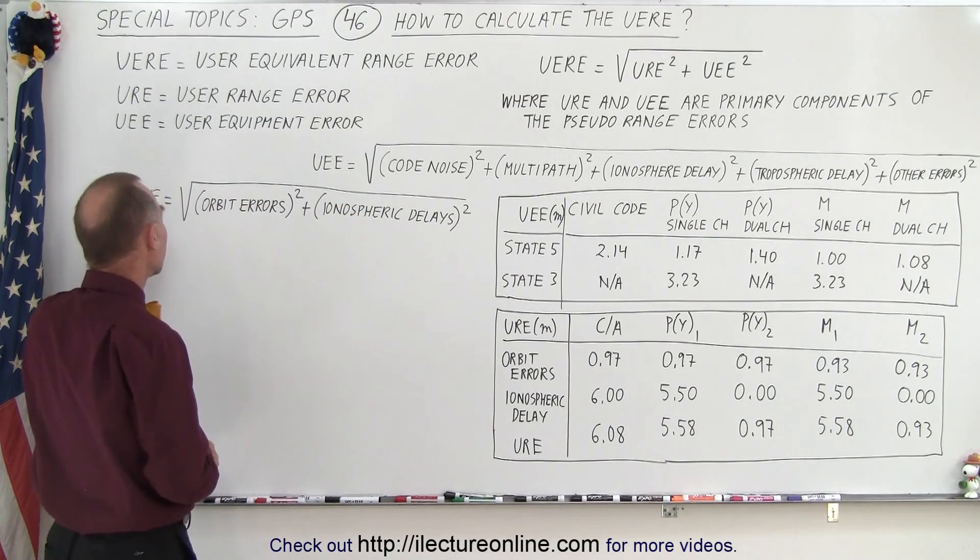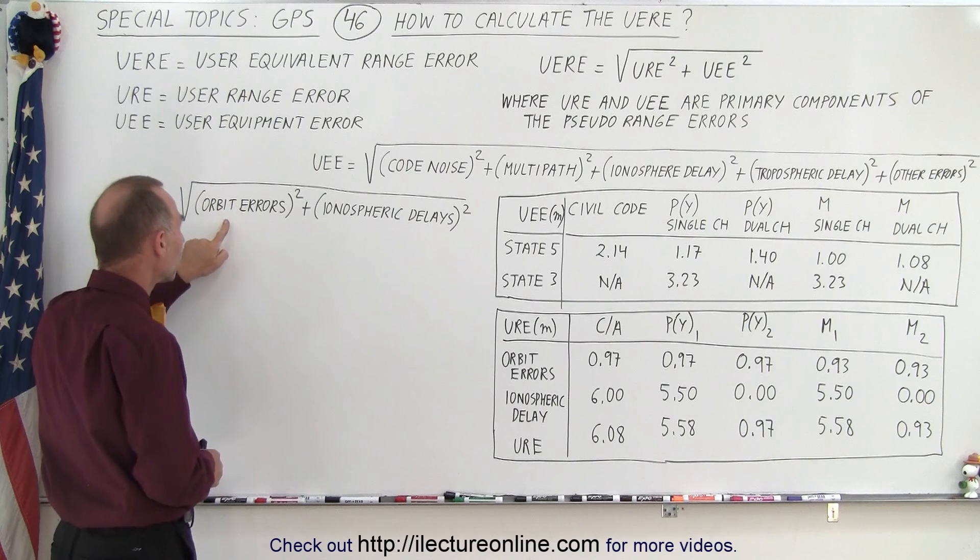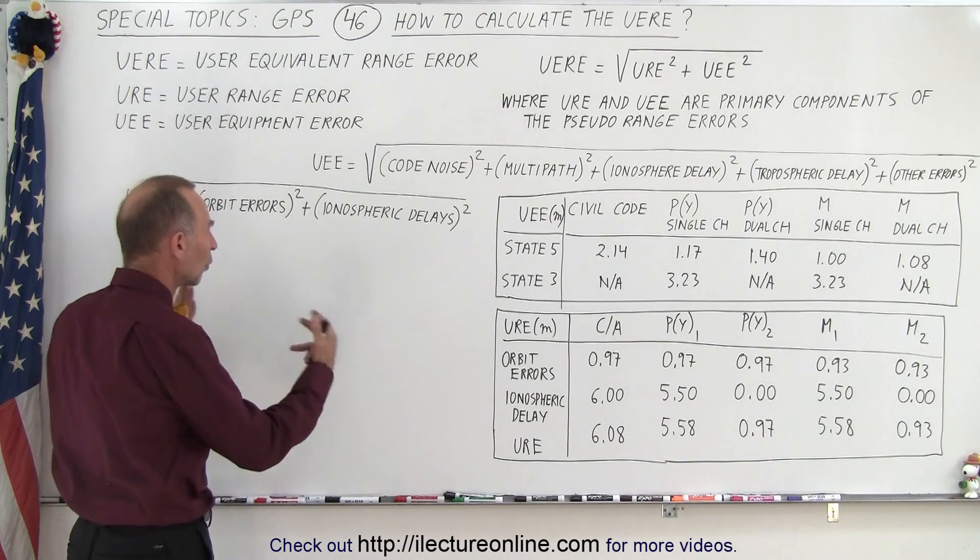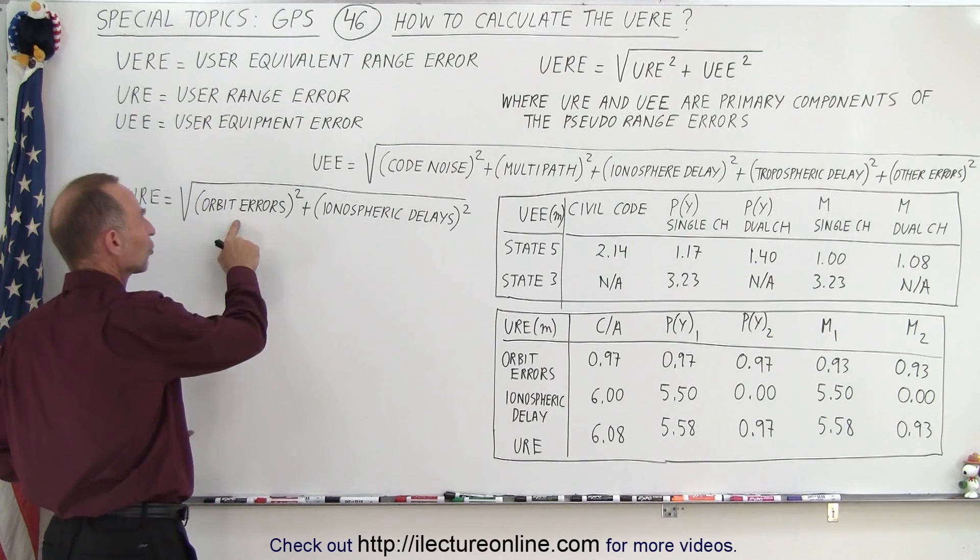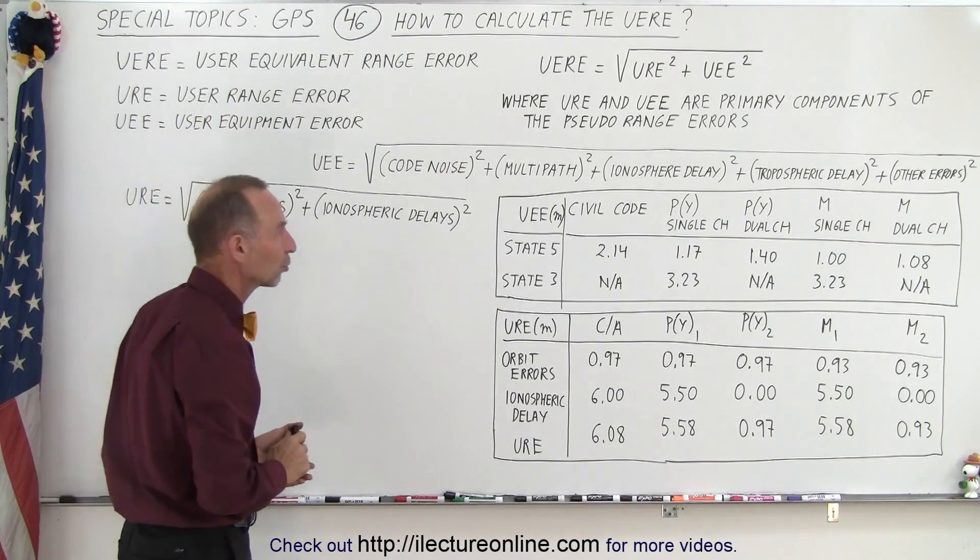The URE consists of the orbit errors and the ionospheric delay, and it's also calculated by taking the square root of the orbit error squared plus the ionospheric delay squared.